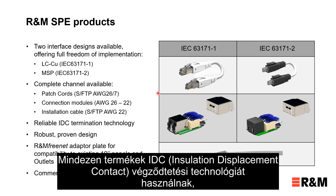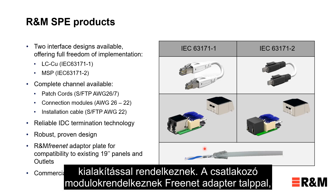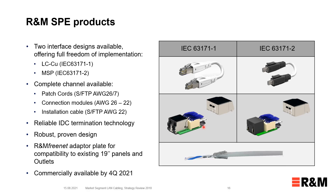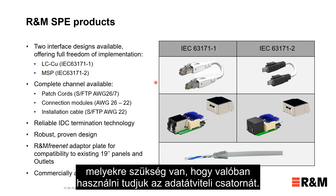All these products use IDC termination technology, proven millions of times in the RJ45 environment. They feature a proven robust design, and the connection modules have a 3NET adapter plate that allows them to connect to every 3NET platform panel or outlet in R&M's assortment. With this, R&M offers a complete channel to the market, including all the additional products needed to truly make use of the system.